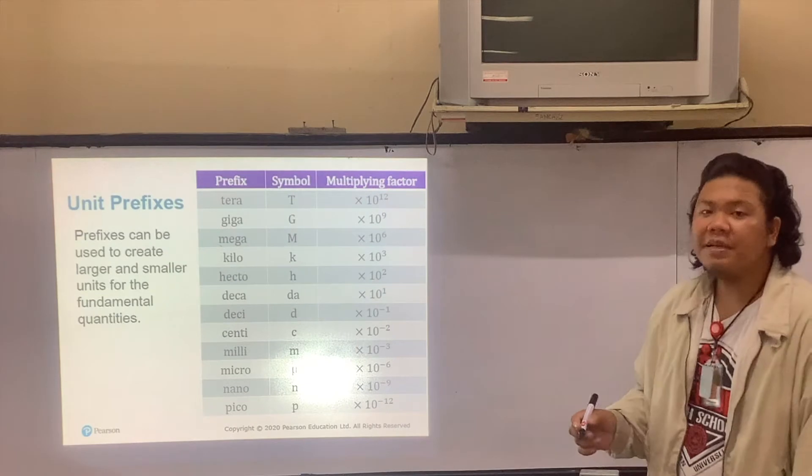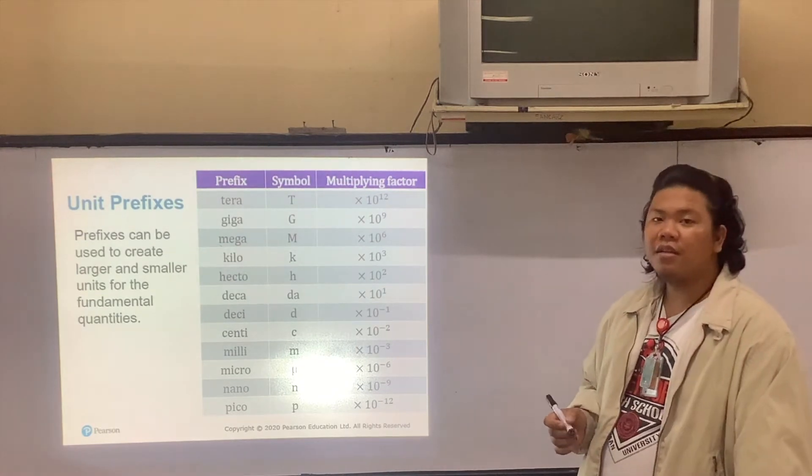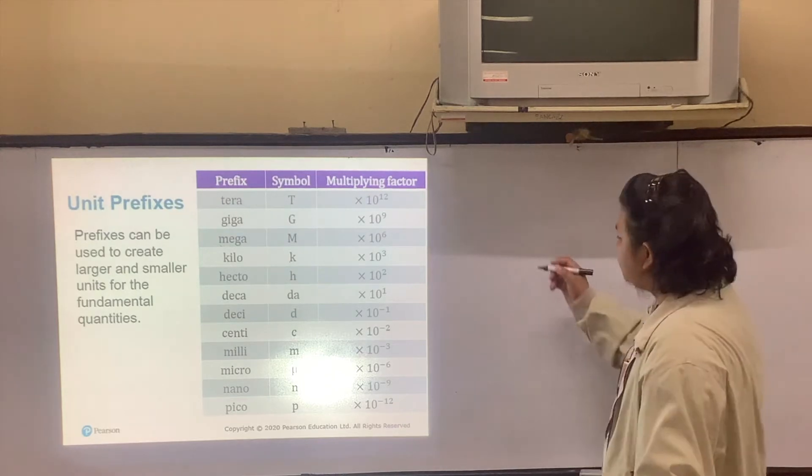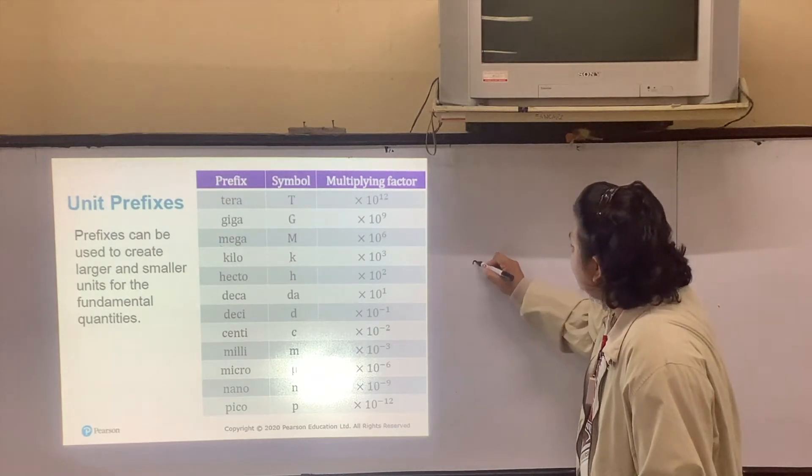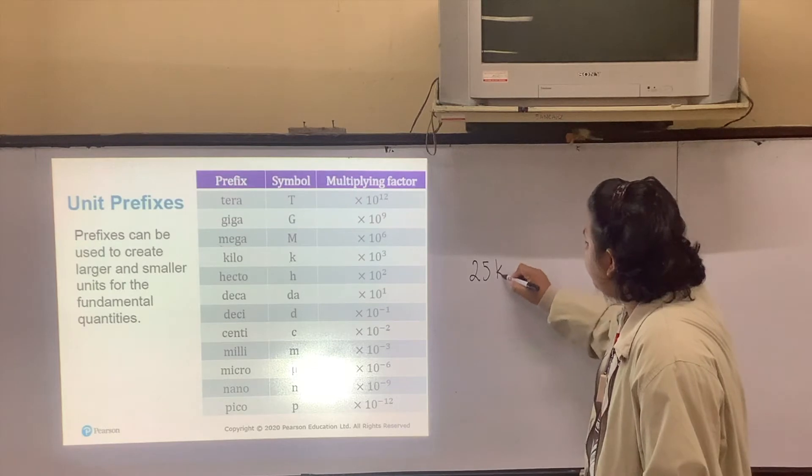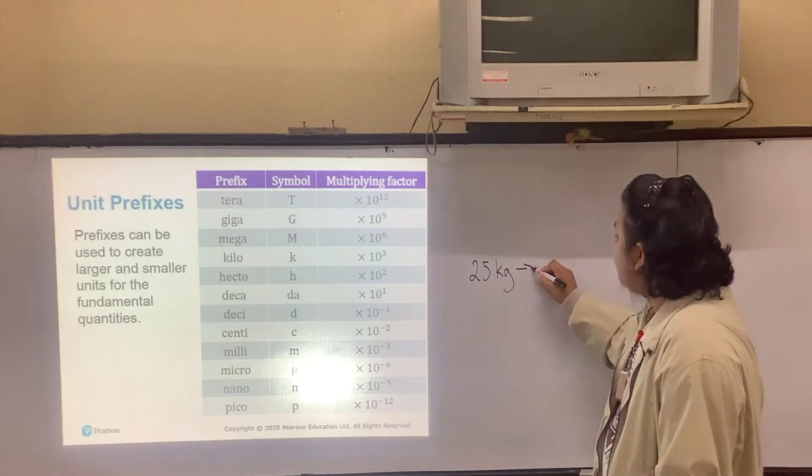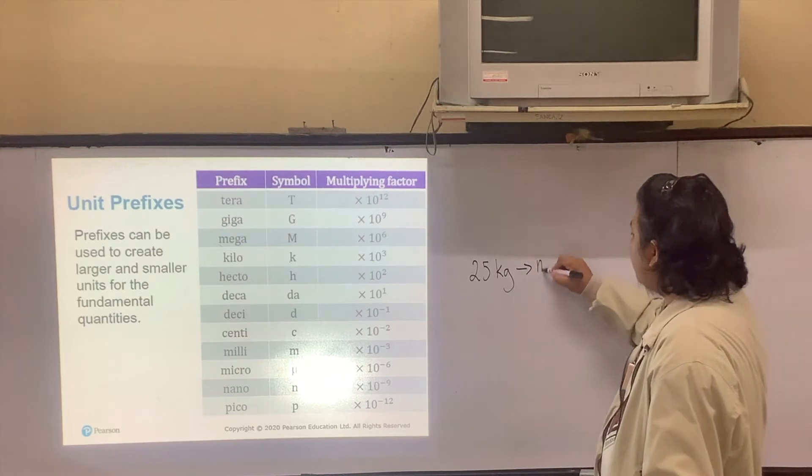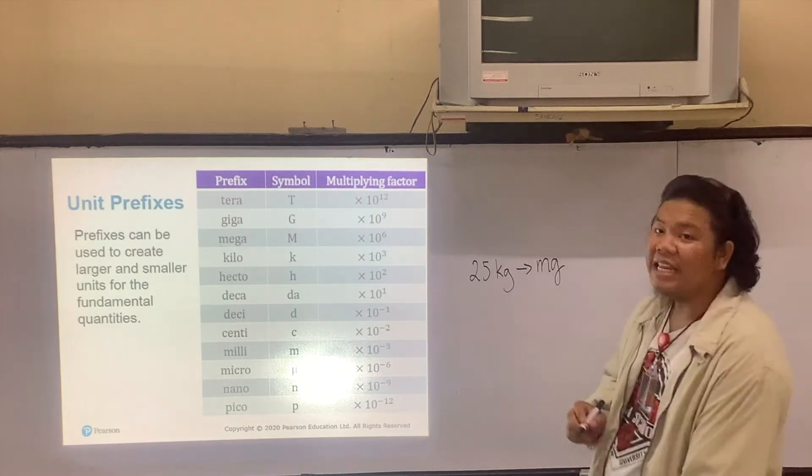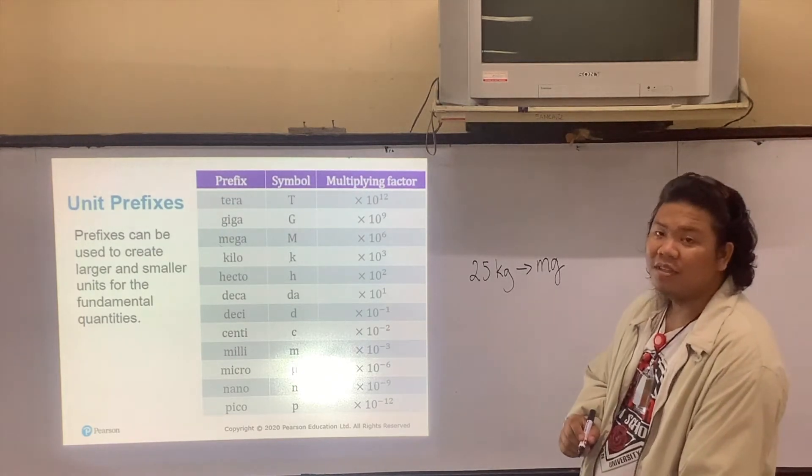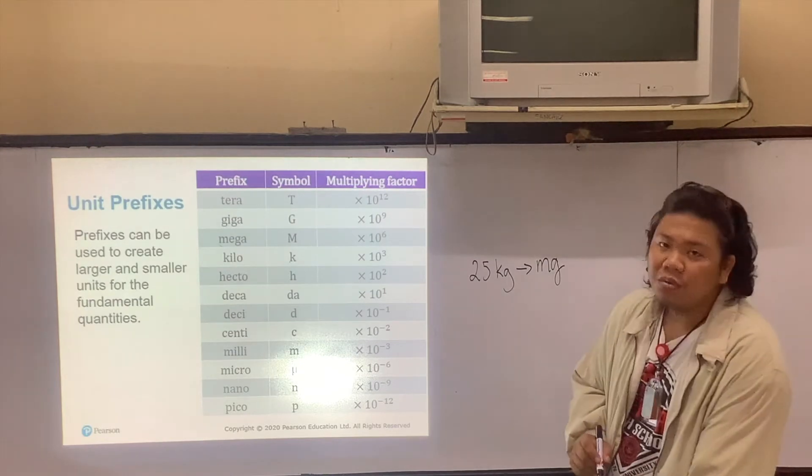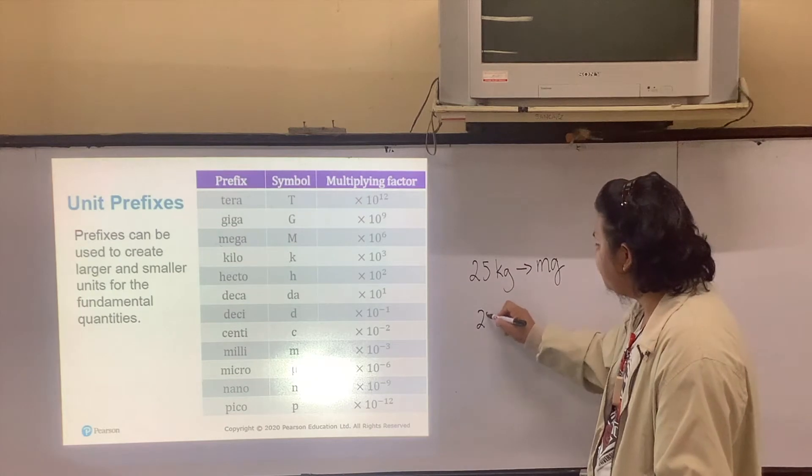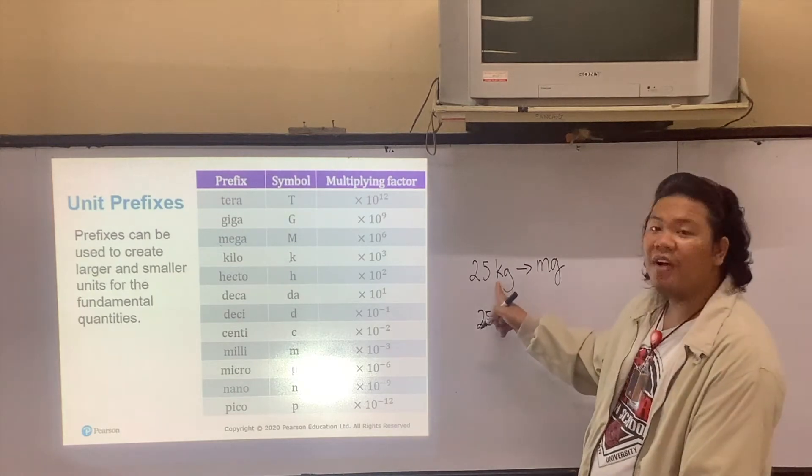Another possible case you can encounter in converting values from one unit to another is similar to this. You have 25 kilograms, and you are to convert this into milligrams. The process is the same. Copy 25 and look at the value of kilo.